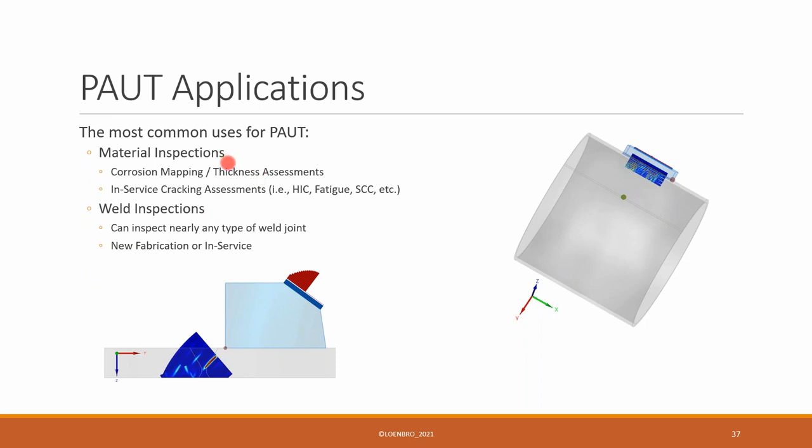All right. So, that's the crash course in the application or how phased-array works. Common phased-array applications, material inspections. So, corrosion mapping, thickness assessments, typically in-service. Also, in-service crack assessments, looking for hydrogen-induced cracking or stepwise cracking, fatigue, mechanical thermal, whatever it may be, stress corrosion, et cetera, et cetera, et cetera. And then, obviously, new fabrication or in-service weld inspection. And one of the pros that we'll see here in a minute is we're not limited in joint types. We can do pretty much any type of joint with phased-array ultrasonics.